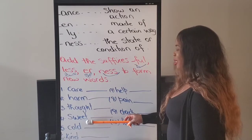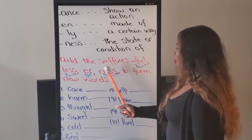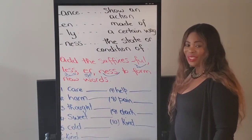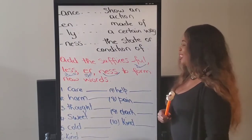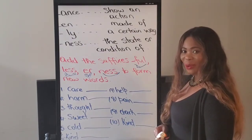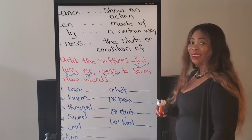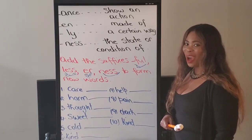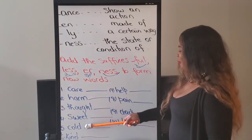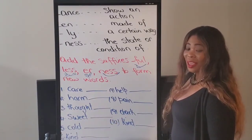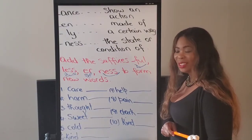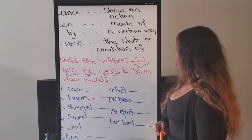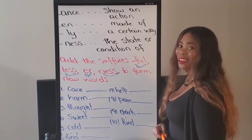Now guys, let's look at 'sweet.' Which one of these would you put there — full, less, er, or ness? 'Sweetness.' You could also use 'sweeter' — this mango is sweeter than the other one. And 'cold' — if you said 'colder,' you are correct. It could be 'colder' or 'coldness.'